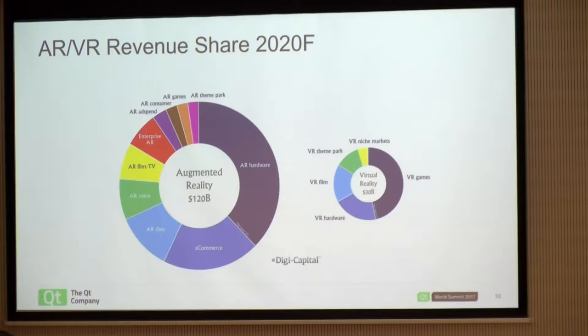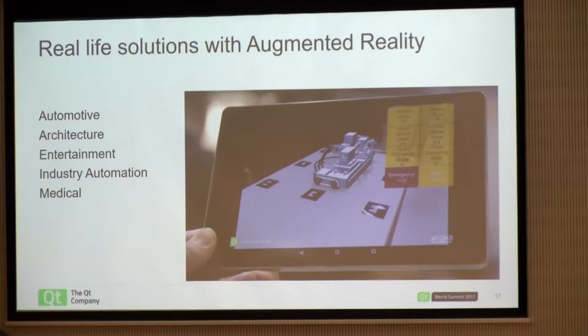Another thing: basic interactions we take for granted — like touch UIs — work beautifully in the physical world, but how do you do them nicely in the virtual world? How do you poke something that is not there? There are quite a lot of things in VR that will shape the future, but it's not quite there yet. We do have examples already built with Qt in automotive — heads-up displays, architectural applications, entertainment, industrial automation, medical applications such as overlaying medical data onto a patient.